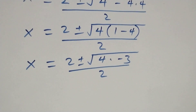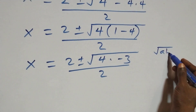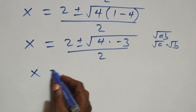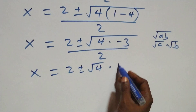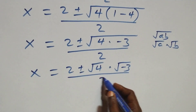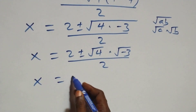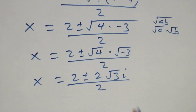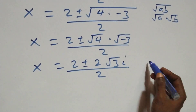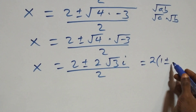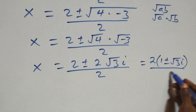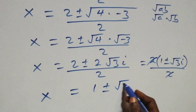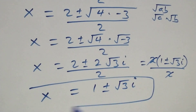Using the rule that root of a times b equals root a times root b, we write x equals 2 plus or minus root 4 times root minus 3, all over 2. Root 4 is 2 and root minus 3 is root 3 times i, so we have x equals 2 plus or minus 2 root 3 i, all over 2. Factoring out 2, we get x equals 1 plus or minus root 3 i. These are two complex solutions.